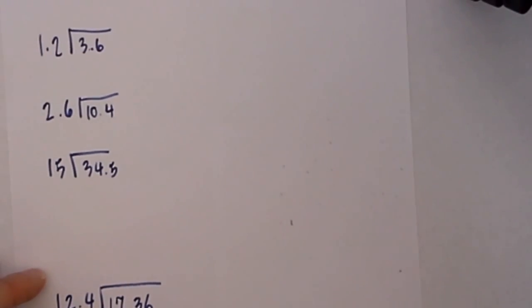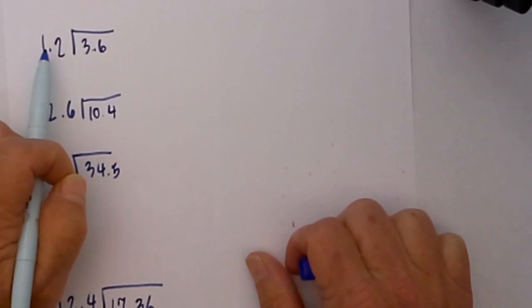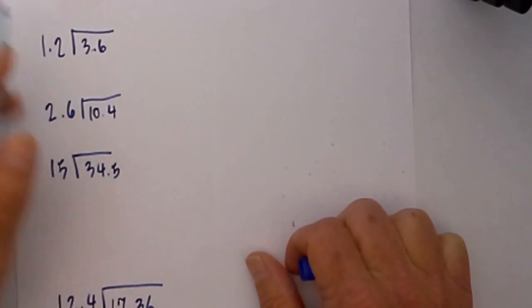Let's divide a couple of problems that have decimals. On number one, notice that we have a decimal here on the outside, so what we'll need to do is move it one to the right so that it is a whole number. What you do on the outside you need to repeat on the inside.